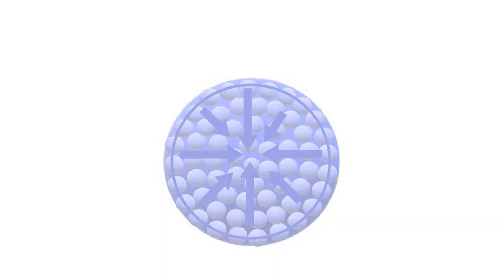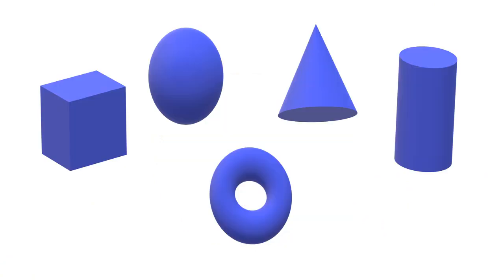So the drop experiences the net force towards its center and tries to maintain least surface area. Among all shapes, sphere has the minimum surface area for a given volume. Hence a freely falling liquid drop is spherical in shape.